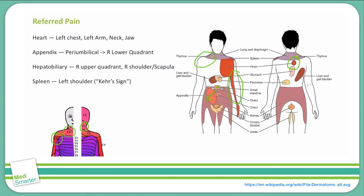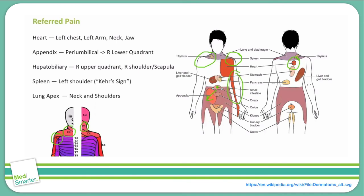Irritation to the left side of the diaphragm caused by problems with the spleen — such as splenic rupture or splenic abscess — can also be felt in the left shoulder. This is known as Kehr's sign. Finally, referred pain from the lung can also be felt in the neck and shoulders; in particular, something like an apical pneumothorax can be felt in these regions.